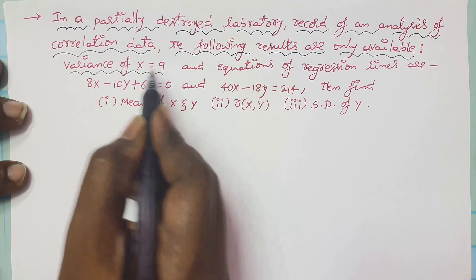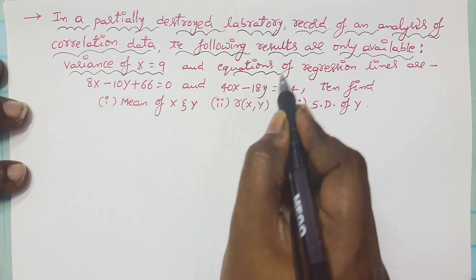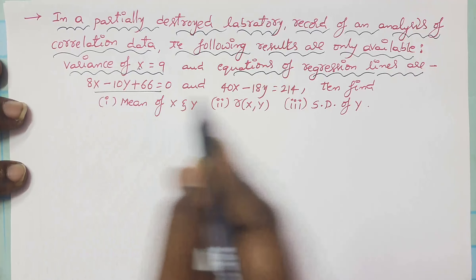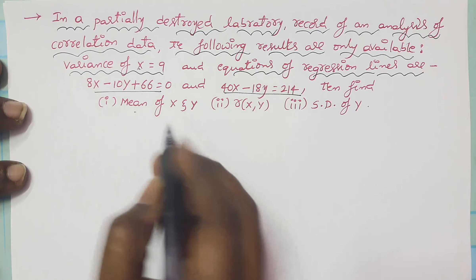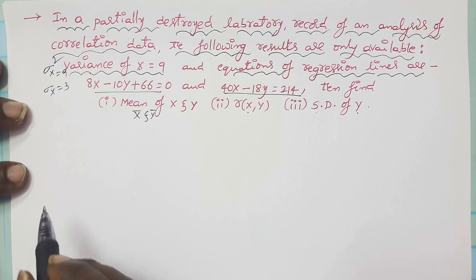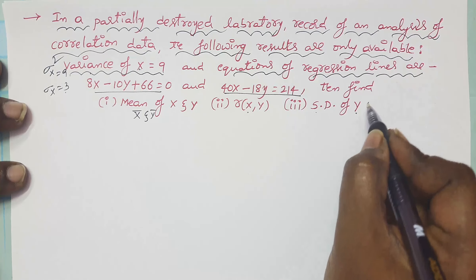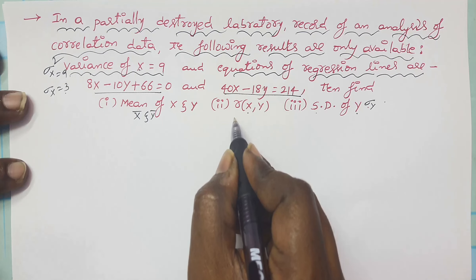The variance of the x-series is 9. Two equations of regression lines are given. The first equation is 8x minus 10y plus 66 equals 0, and the second regression line is 40x minus 18y equals 214. We have to find x-bar, y-bar, the correlation coefficient r, and the standard deviation of y. Since variance of x is given as sigma-x-squared equals 9, sigma-x equals 3. This is a very important and repeated problem in semester exams of many universities, so please prepare carefully.